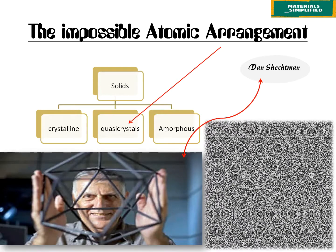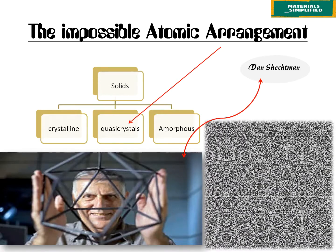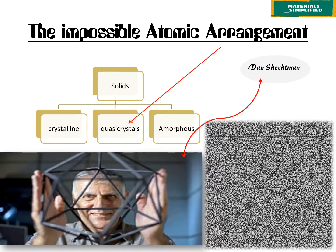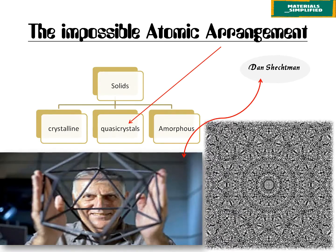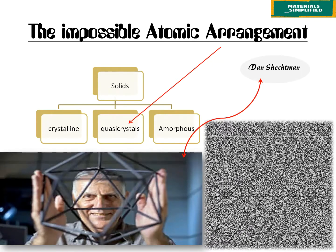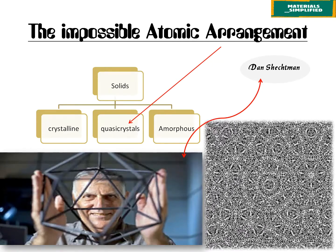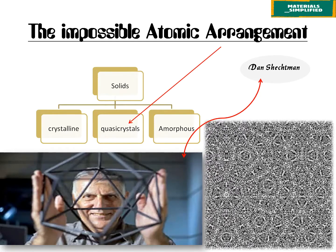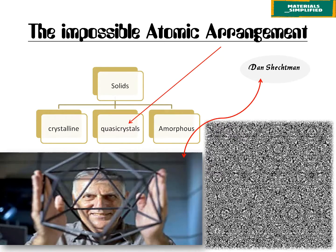In other words, it has a translational symmetry which a normal crystal would possess, but there is no periodic arrangement. Since there is no periodic arrangement, quasicrystals will fill all the available spaces just like a normal crystal does.